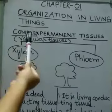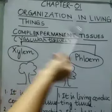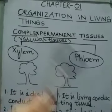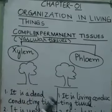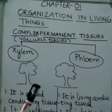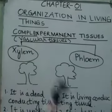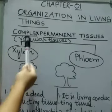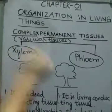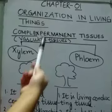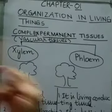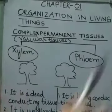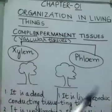Complex permanent tissues are the types of tissues which are made up of more than one type of cells, and these cells coordinate to form a common function. These tissues are also known as vascular tissues because their function is to transport water and other minerals to all the parts of the body of the plant.